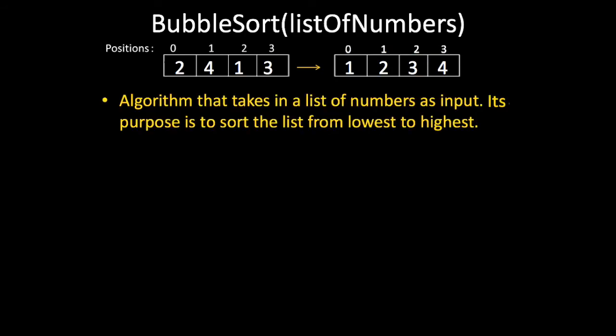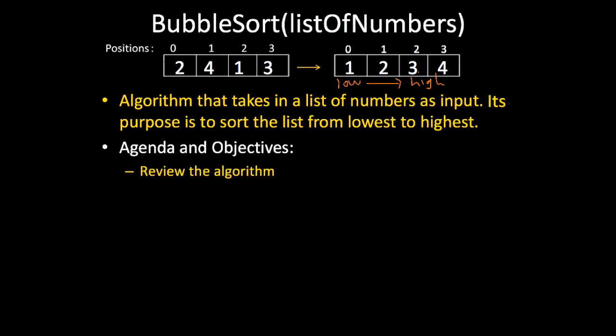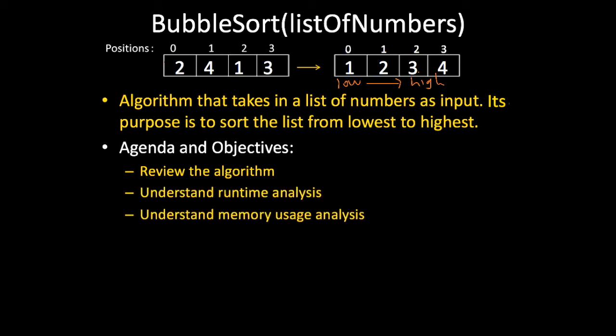Today we're going to be discussing Bubble Sort, which is a sorting algorithm that takes in a list of values and sorts them such that the lowest values are on the left of the list and the highest values are on the right. Our agenda today: first, we're going to review the algorithm procedure — please check out the intuition video that comes before this one if needed. Next, we're going to do a Big O analysis for both runtime and memory. And lastly, we will discuss when it is best to use Bubble Sort, which you will discover is rarely the case.